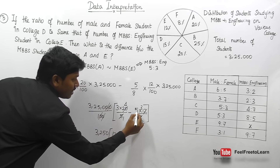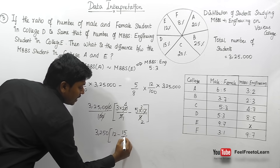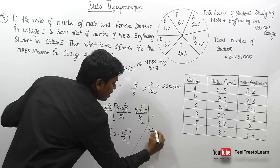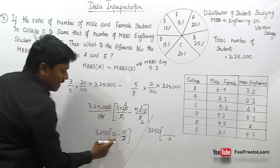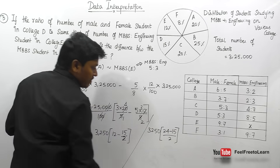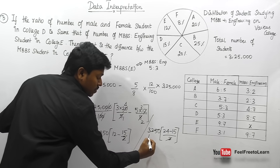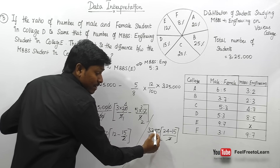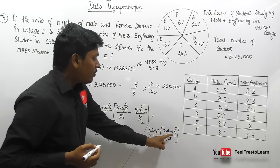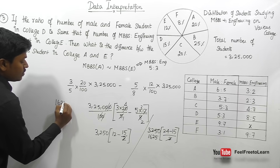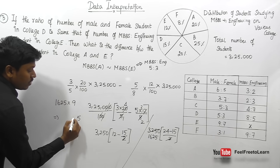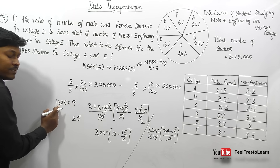Taking LCM of 2: (24 − 15)/2 = 9/2. Cancelling the 2: 3,250 ÷ 2 = 1,625. Now multiply 1,625 × 9: 9 fives are 45 (carry 4), 9 twos are 18 plus 4 = 22 (carry 2), 9 sixes are 54 plus 2 = 56 (carry 5), 9 ones are 9 plus 5 = 14.